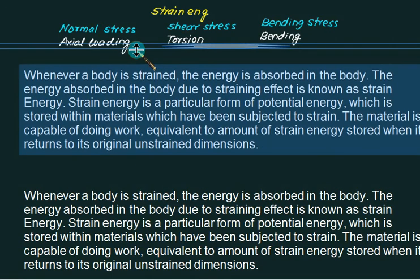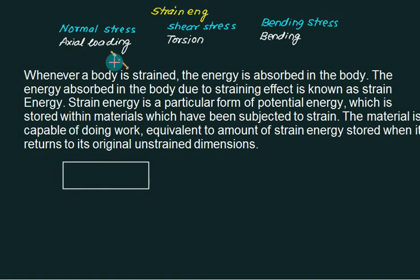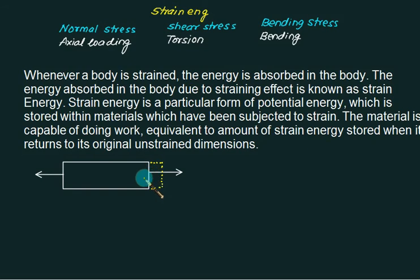So what is basically the strain energy? When a body is strained, the energy is absorbed in the body. Suppose you are given a bar and you apply a force to it — because of the force applied, the body will get deformed. So there is some elastic energy stored inside the body. The maximum energy stored is up to the elastic limit, that is SYT. If you release the force, the amount of energy stored in the body is called strain energy.